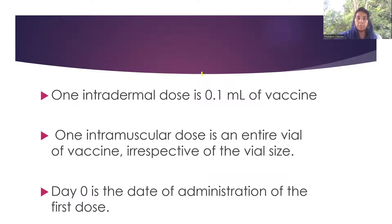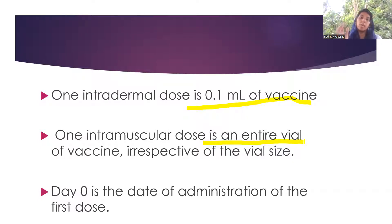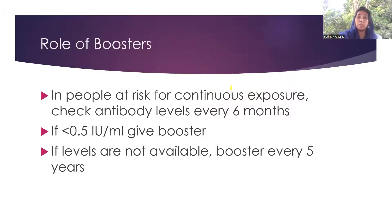One intradermal dose is always 0.1 ml of the vaccine, whereas one intramuscular dose is the entire vial of the vaccine. The entire vial may be 0.5 ml or 1 ml — most vaccines are 1 ml, except vero cell vaccine which is 0.5 ml. Day zero is the date of administration of the first vaccine, not the day of the bite. For continuous exposure, boosters should be checked every six months. If titers are less than 0.5 international units per ml, give a booster. If levels are unavailable, boosters can be given every five years.